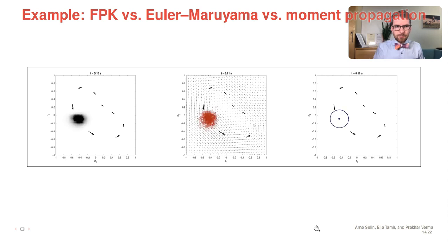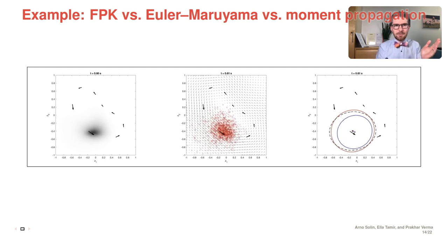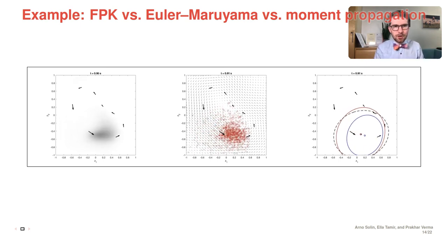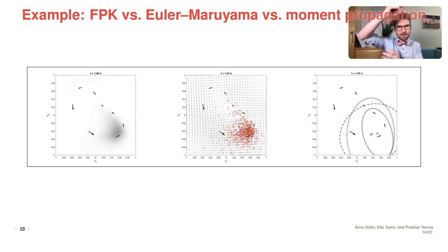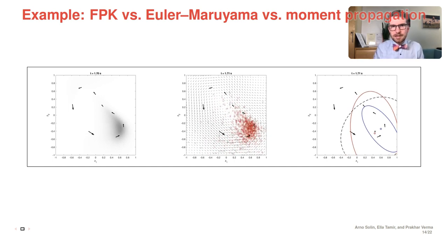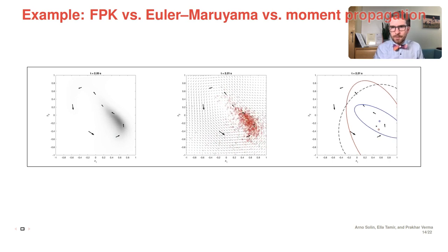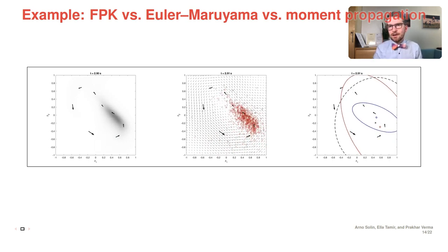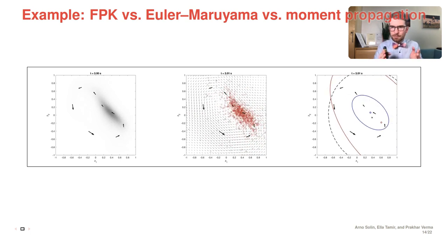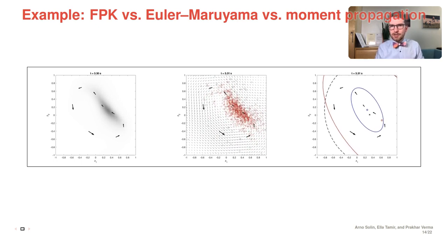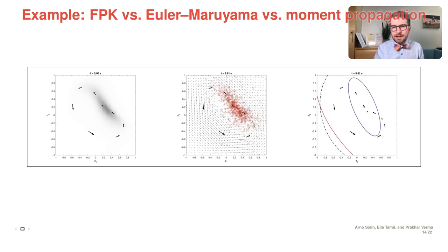Here you can see an example where on the far left you see the actual solution to the Fokker-Planck-Kolmogorov equation shows the probability mass spreading as you go. In the middle you see the Euler-Maruyama trajectories or the points, how they evolve. And on the far right you see our approximations in terms of linearization in blue, mode-seeking, and moment matching in red. The dashed lines represent the exact Gaussian fit to the problem.